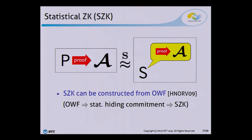Although it is very strong, statistical zero-knowledge is known to be constructible from one-way functions. In fact, it was shown that a statistical hiding commitment can be constructed from a one-way function, and so we can obtain statistical zero-knowledge from a one-way function by simply using this statistical hiding commitment.